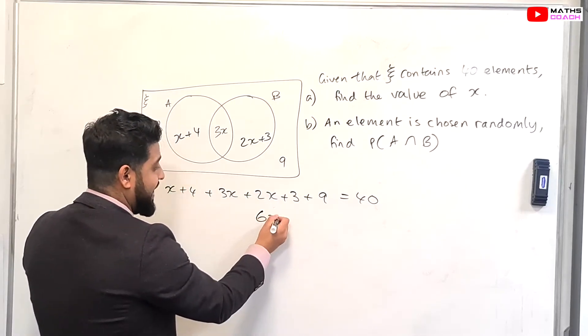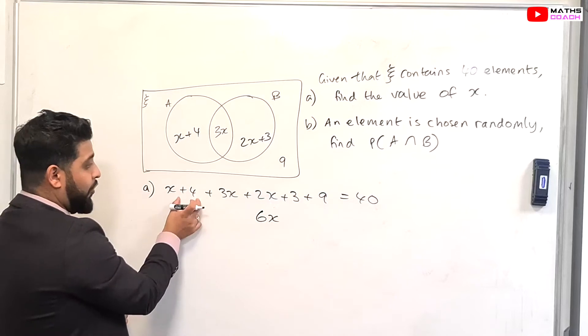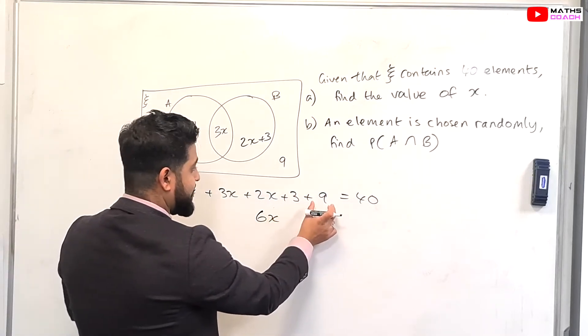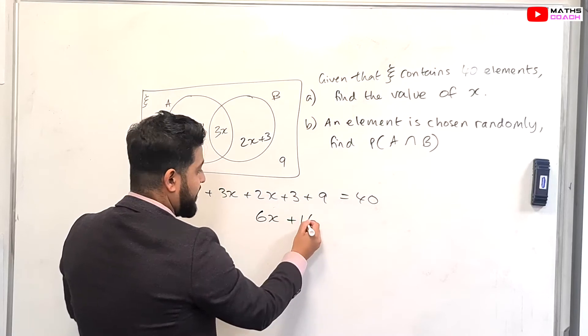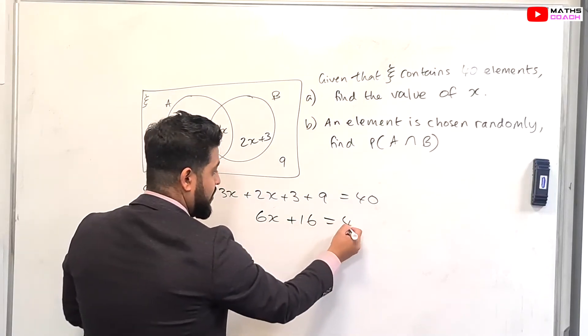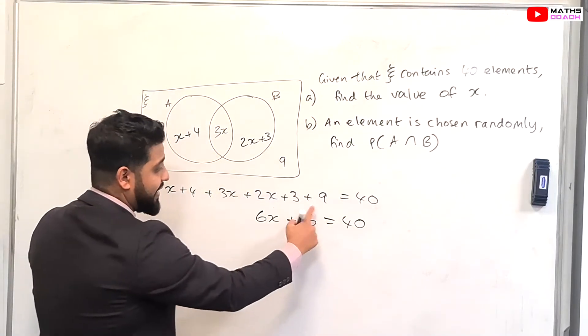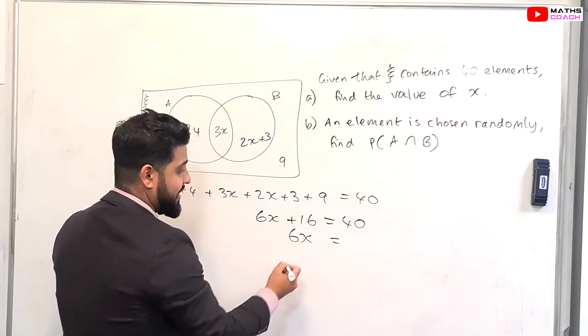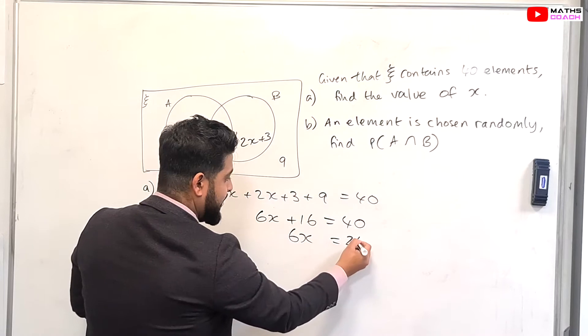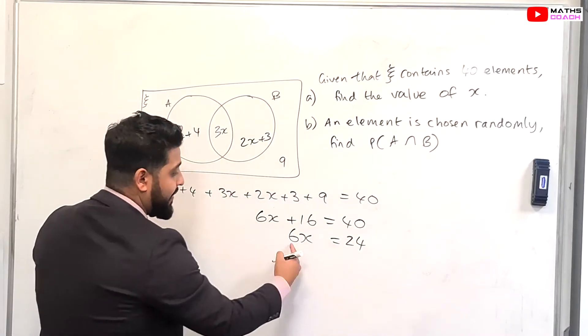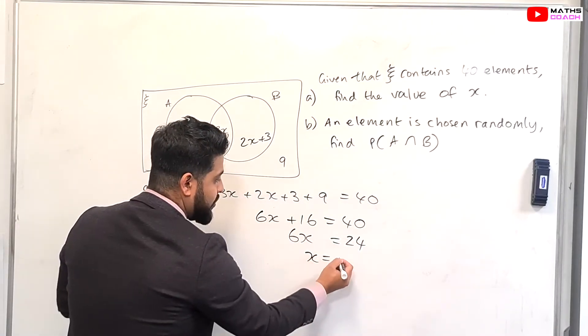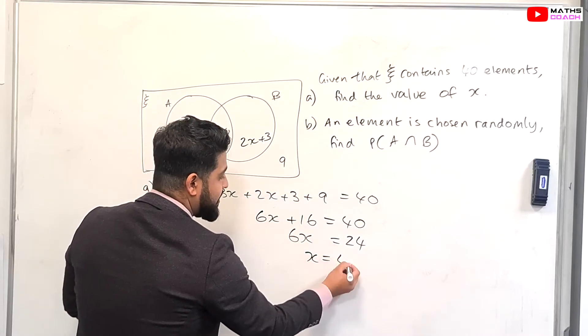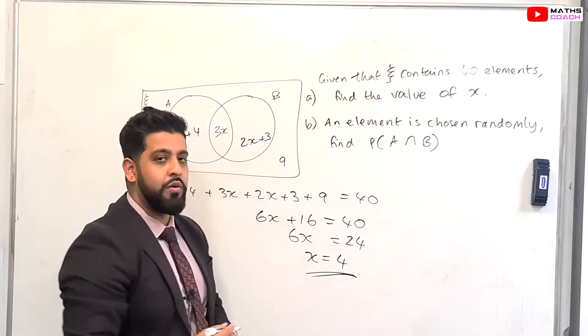If we collect the like terms, solve this equation, we will find our value for X. So let's start off by simplifying. So we have X plus 3X, 4X, 4X plus 2X is 6X. So we have 6X. And the numbers, we have 4 plus 3, which is 7. 7 plus 9, 16. So plus 16 equals 40. And we can take the 16 to the other side. So 40 minus 16, we're left with 6X here, and we're left with 24 there. And then we divide by 6. So X is equal to 24 divided by 6. And 24 divided by 6 is 4. So X is equal to 4.